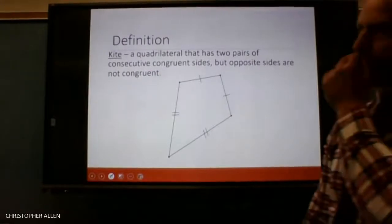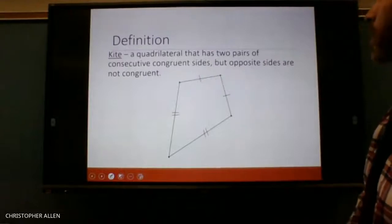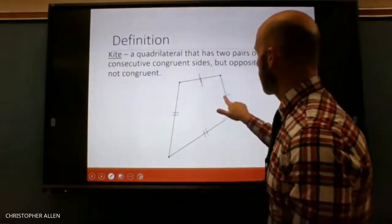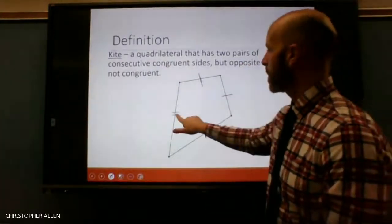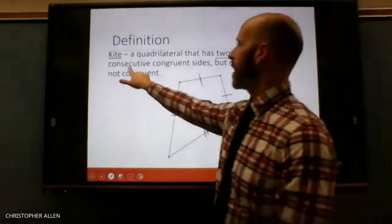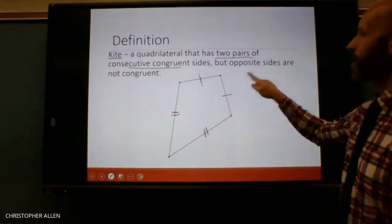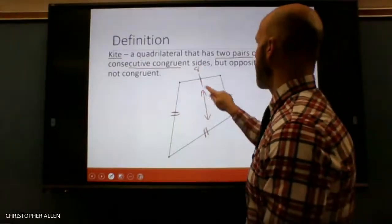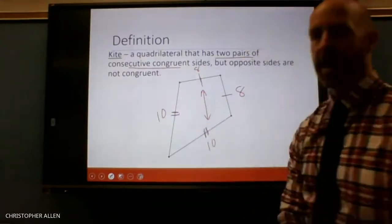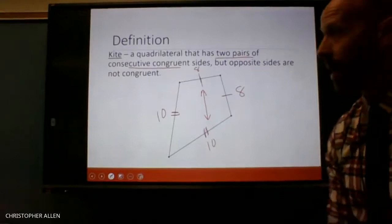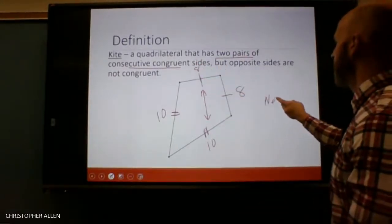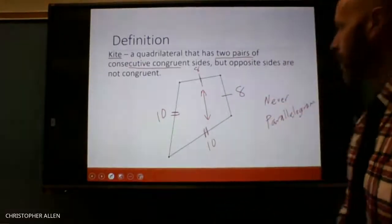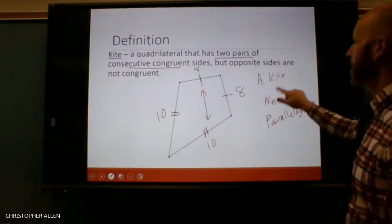Now let's talk about a kite. A kite is a quadrilateral that has two pairs of consecutive congruent sides — this side is congruent to this side, and this side is congruent to this side. But opposite sides are not congruent. A kite is never a parallelogram.